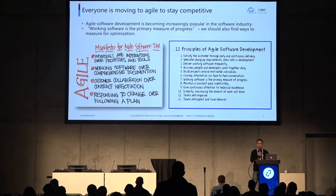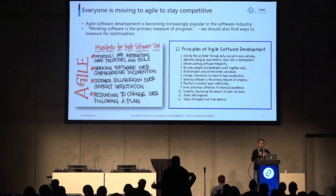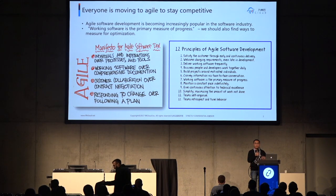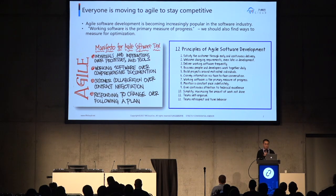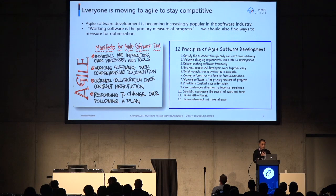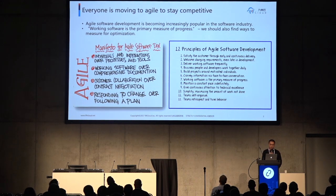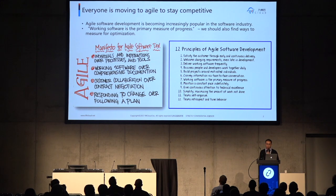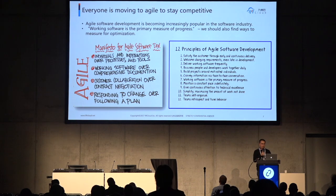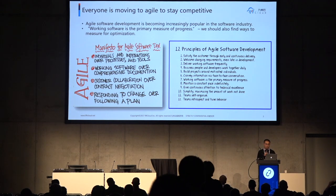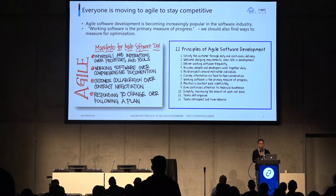Nowadays, everyone is moving to Agile to stay competitive, and Agile development has become a very trendy buzzword. The Agile manifesto has four key values to streamline the software development process. First is individuals and interaction over process and tools. Second is working software over comprehensive documentation. Third is customer collaboration over contract negotiation. Fourth is responding to change over following a plan. Based on these four values, developers came up with another 12 principles of Agile software development.